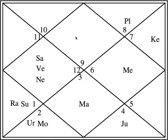For example, the twelfth house from the third house: count one through twelve from the third house and you get back to the second house. So this is the third house where eleven — the sign of Aquarius — is written, and the twelfth from this house is the second house where number ten, Capricorn, is written.